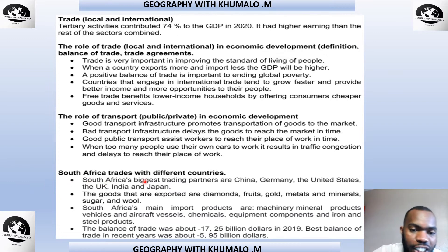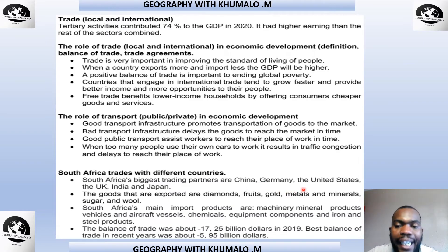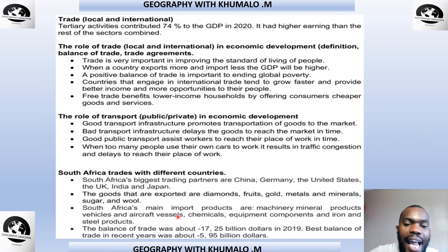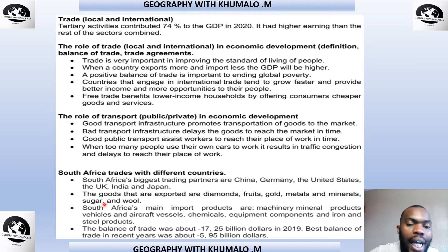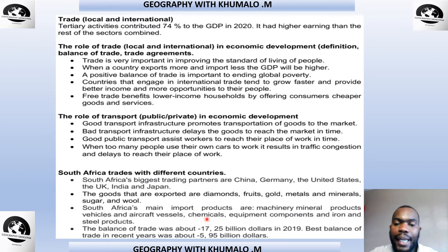South Africa's biggest trading partners are China, Germany, the United States, the UK, India, and Japan. The goods that are exported include diamonds, fruits, gold, metals, minerals, sugar, and wool. South Africa's main import products are machinery, mineral products, vehicles and aircraft vessels, chemicals, equipment, components, and iron and steel products.